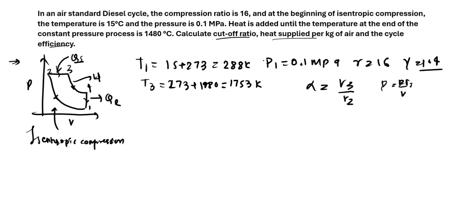So we have P as constant. So we have RT2 by V2 should be equal to RT3 by V3. You can cancel R. We have V3 by V2 as T3 by T2. So you can use this to calculate the cutoff ratio, which should be T3 by T2 because it is a constant pressure process.